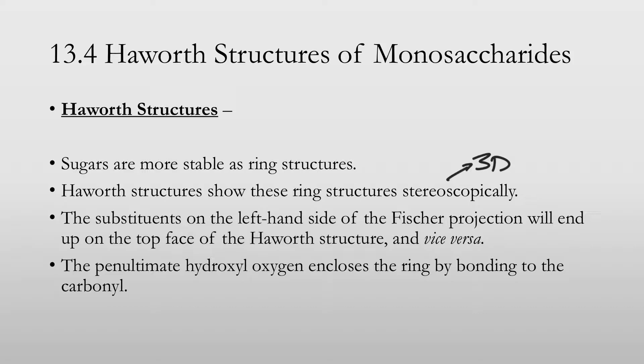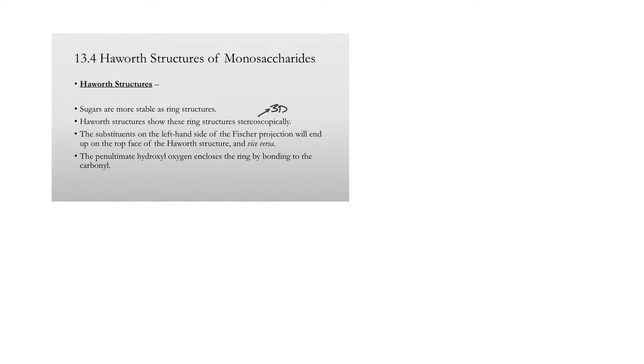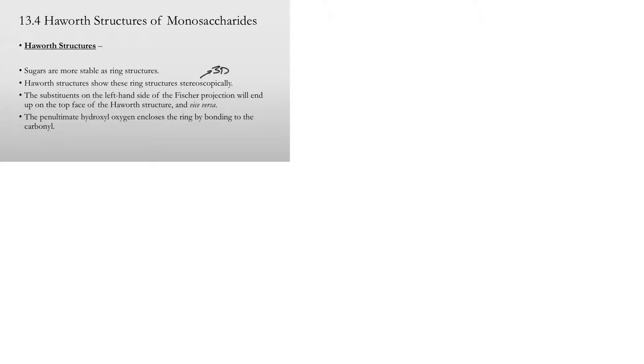The substituents on the left-hand side of the Fischer projection will end up on the top face of the Haworth structure, and the ones on the right-hand side will end up below it. The penultimate hydroxyl oxygen encloses the ring by bonding to the carbonyl. So if I take one of the simpler sugars and draw the Fischer projection, I'll show you how to get to the Haworth projection from that. And I'll just use glucose, which is the simplest hexose, six-membered sugar.